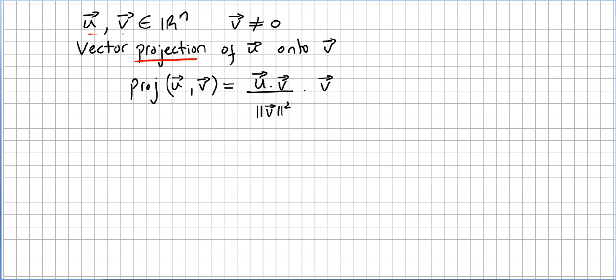So we have vector u and vector v, both in the vector space R^n, where v is not zero. The vector projection of u onto v is written this way: projection of u onto v is defined as (u · v) / ||v||² times vector v.